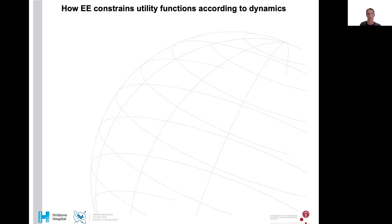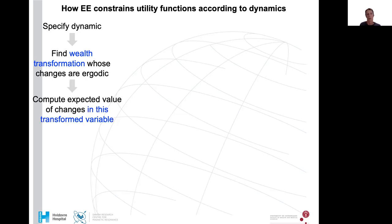How does EE constrain utility functions according to dynamics? When you're confronted with a monetary decision, some gamble, you have to find out what is the dynamic process behind the potential changes in wealth that you're facing. When I've figured out the dynamic, I need to find the wealth transformation where the changes are ergodic, and then compute the expected value of changes in this transformed variable. If I then maximize this, I maximize my time average growth rate of wealth.